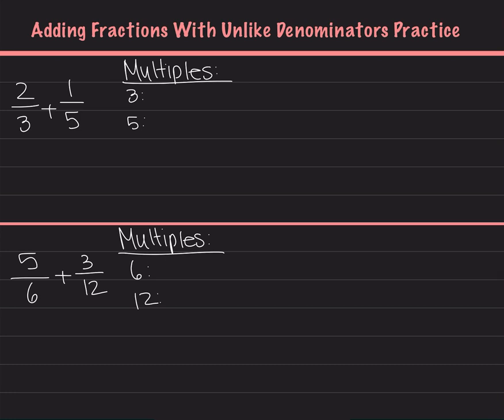To do that, we're going to list the multiples of 3 and 5, which are our denominators, and then find the one that's the least common, and then change that as our new denominator in order to add the fractions. Starting off, the multiples of 3 are 3, 6, 9, 12, 15.